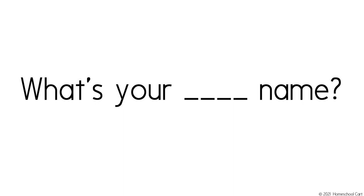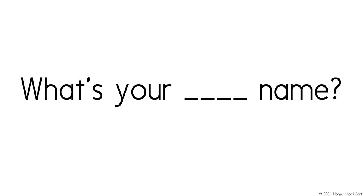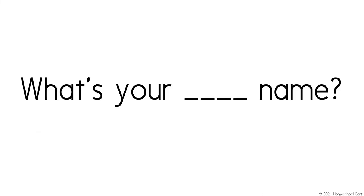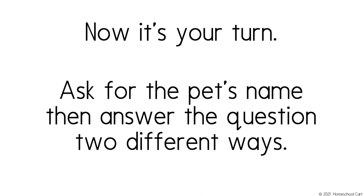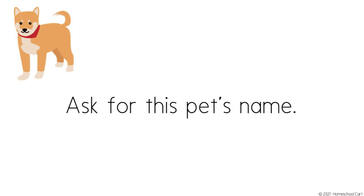Ask for this pet's name. Excellent! Great job! To answer this question, you can just respond with the pet's name, or use the sentence structure: my cat's name is, and then say your pet's name. For example, what's your cat's name? You could say Snuffles. Or if someone asks what's your cat's name, you can say: my cat's name is Snuffles. Now it's your turn. Ask for the pet's name, then answer the question two different ways. What's your cat's name? Snuffles. My cat's name is Snuffles, or this is Snuffles. Great job! Try these on your own.